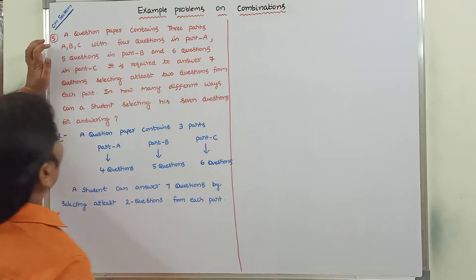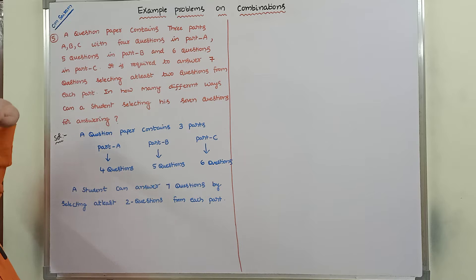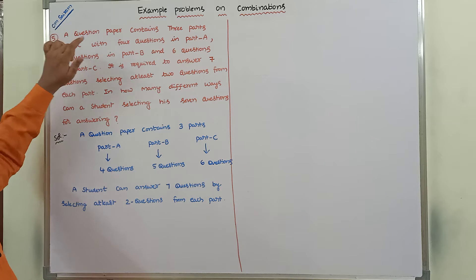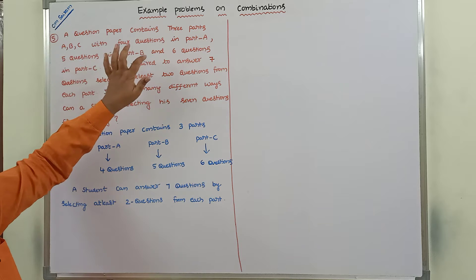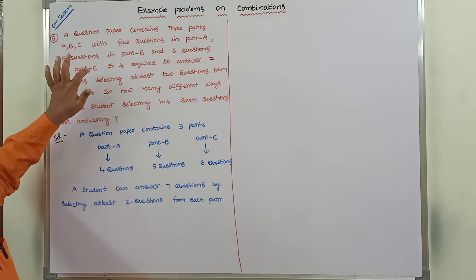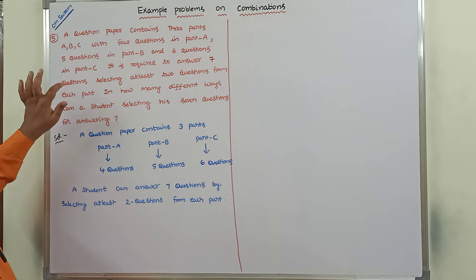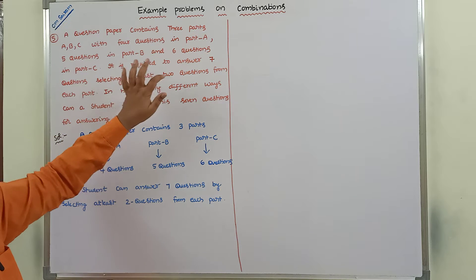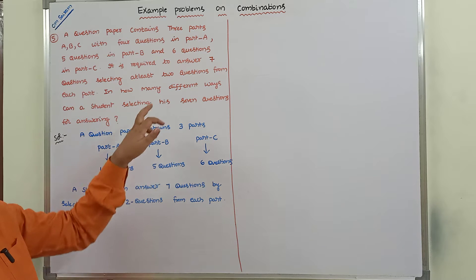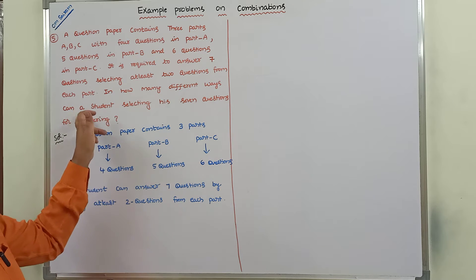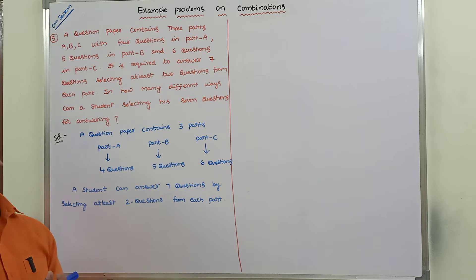A question paper contains 3 parts — A, B, C — with 4 questions in part A, 5 questions in part B, and 6 questions in part C. It is required to answer 7 questions by selecting at least 2 questions from each part. In how many different ways can a student select his 7 questions for answering?